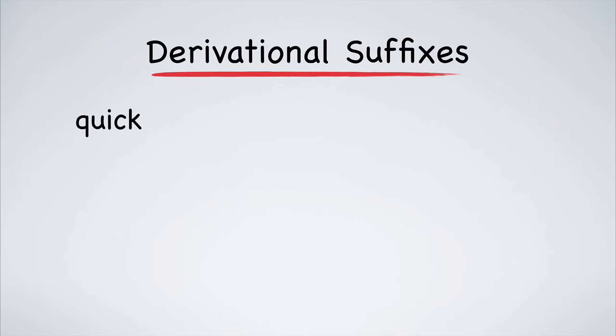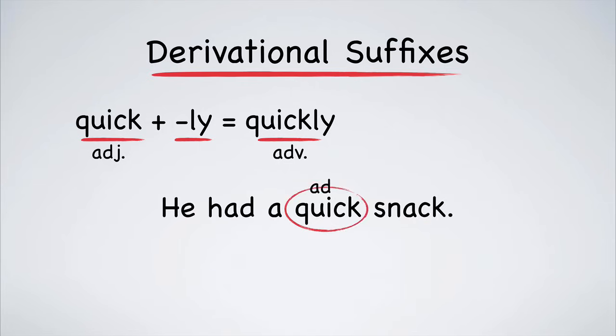For example, the adjective quick can have -ly added to it to create the adverb quickly. Here are two example sentences: 'He had a quick snack,' that's an adjective. 'He ate it quickly,' that's an adverb. Learning how to use these derivational suffixes is one of the keys to speaking English fluently.